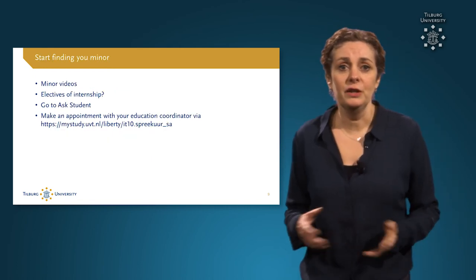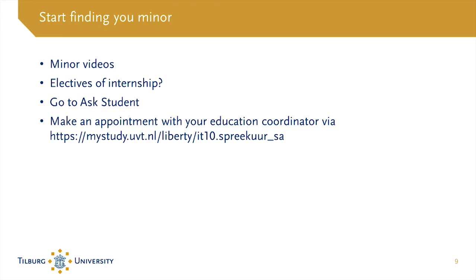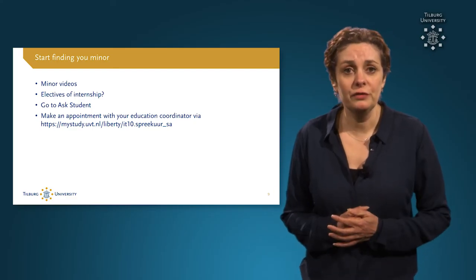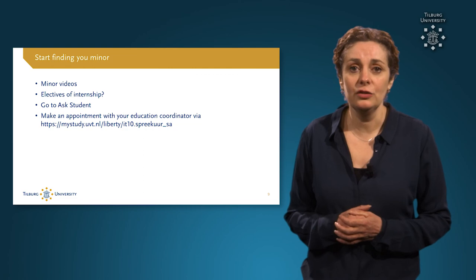So now you can start finding your minor. Watch the minor videos and read the course descriptions in the course catalogues. Determine whether you want to do an internship or follow two electives. In Ask a Student, you can find answers to the most frequently asked questions about our minors. You can also make an appointment with your education coordinator if your questions are not answered by the information online and in Ask a Student. I hope you have had enough information and I would like to wish you good luck in choosing your minor.